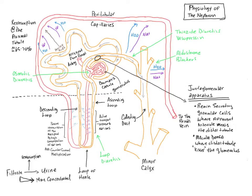We're going to pick up where we left off yesterday, where we were talking about the basic anatomy and physiology of the kidney. Now we're going to go into a little more detail regarding the physiology of the kidney, specifically of the nephron, and that's going to help us understand the processes of filtration, reabsorption, secretion, and excretion in better detail. We'll also be able to appreciate where some of these hormones and medications act upon the kidneys.